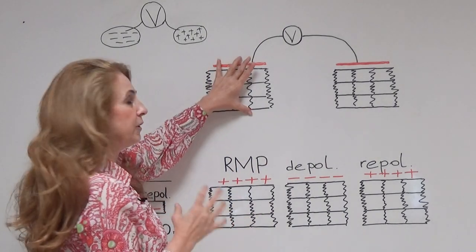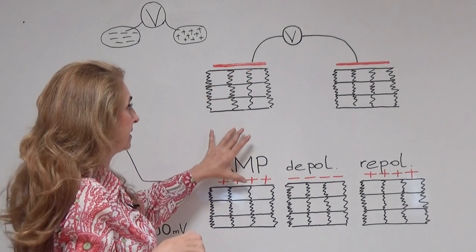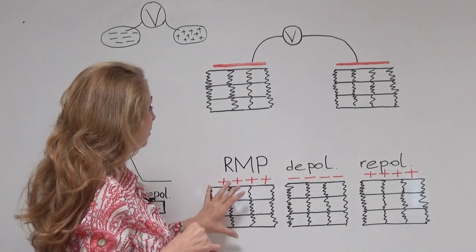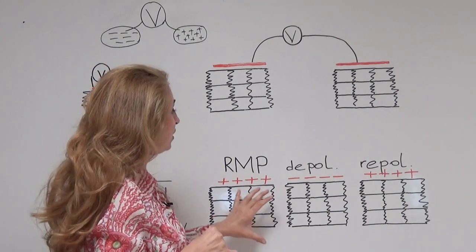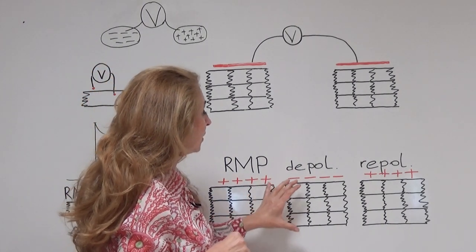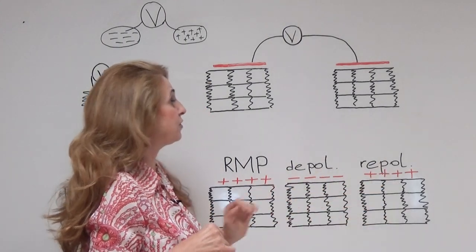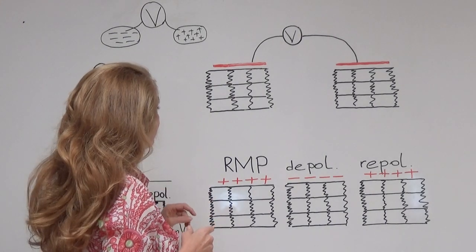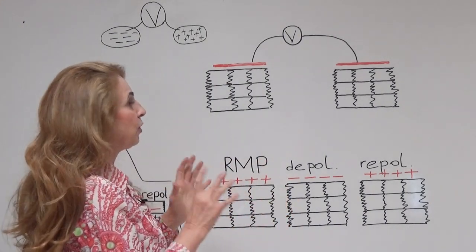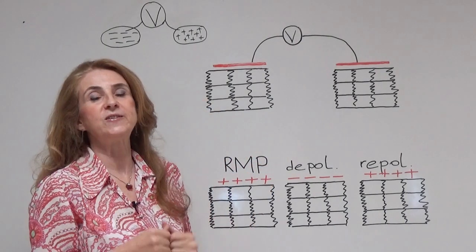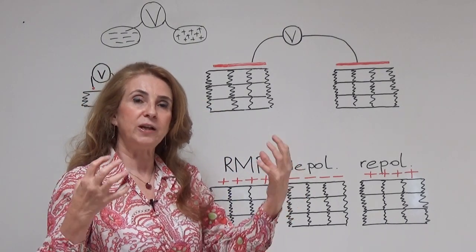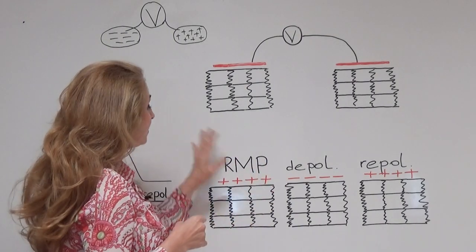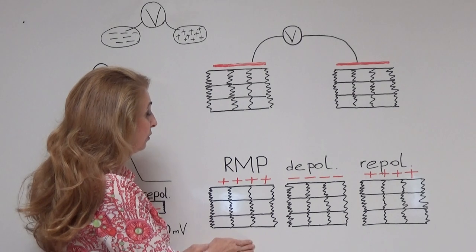At the bottom I have taken only one group of cells and I am examining the charges around these cells during different phases of the action potential. After we learn this, I will go back to two groups of cells and explain the dipoles between them. Here I start by looking at one group of cells.